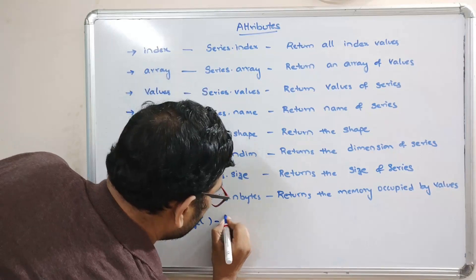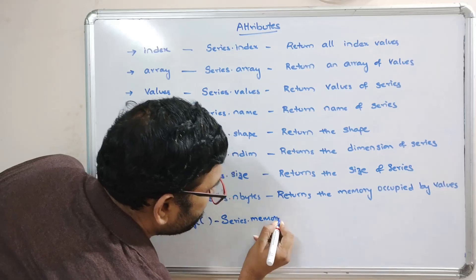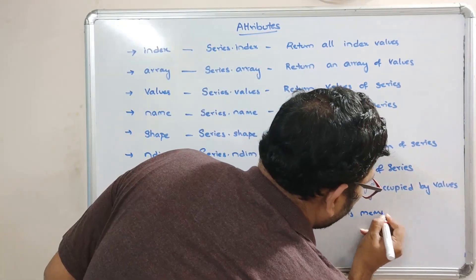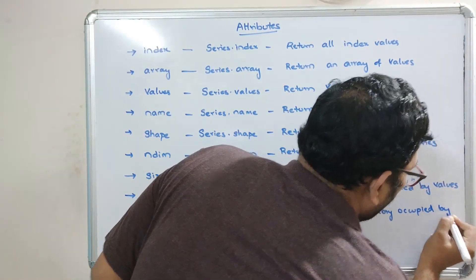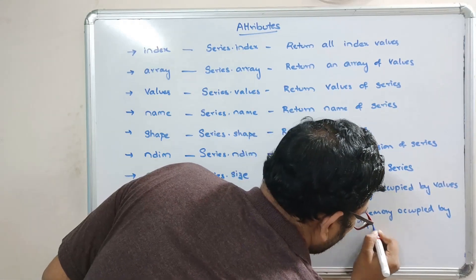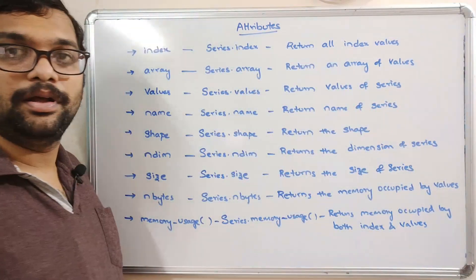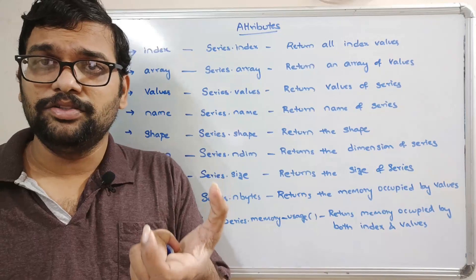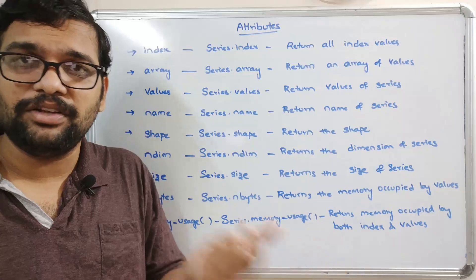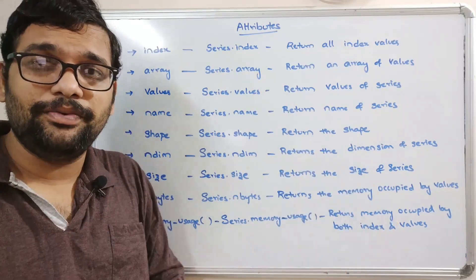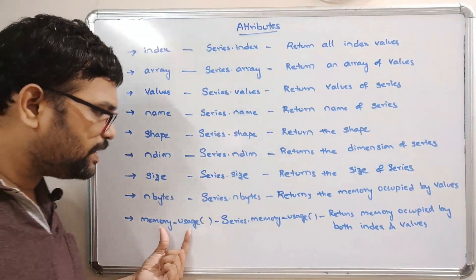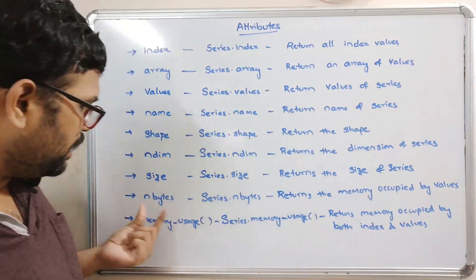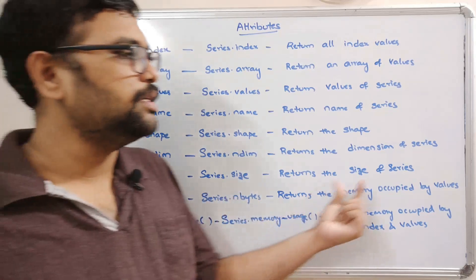The memory_usage function — syntax: series.memory_usage() — returns the memory occupied by both the index and values. We know that when you create any series, index values are automatically assigned. The memory_usage function returns memory for both index and values, whereas nbytes returns memory occupied by only the values, excluding the indexes.